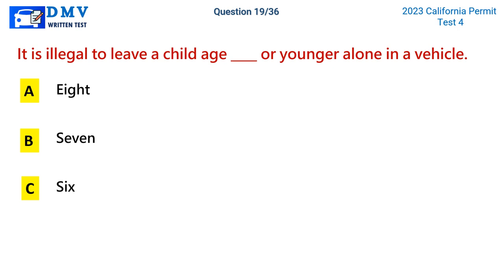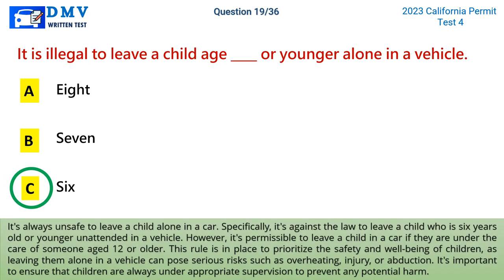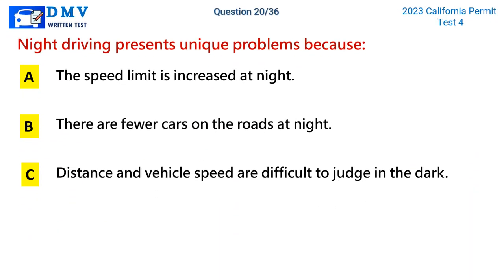Question 19: It is illegal to leave a child age blank or younger alone in a vehicle. A) 8, B) 7, C) 6. The correct answer is C, age 6. It's against the law to leave a child who is six years old or younger unattended in a vehicle. However, it is permissible to leave a child in a car if they are under the care of someone age 12 or older. This rule prioritizes children's safety, as leaving them alone poses serious risks such as overheating, injury, or abduction.